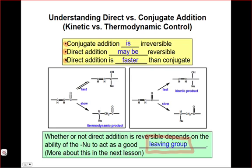A third key point is that direct addition is faster than conjugate, which means that the kinetic product, or the product that's formed more quickly, regardless of the nucleophile used, will be the direct addition product.